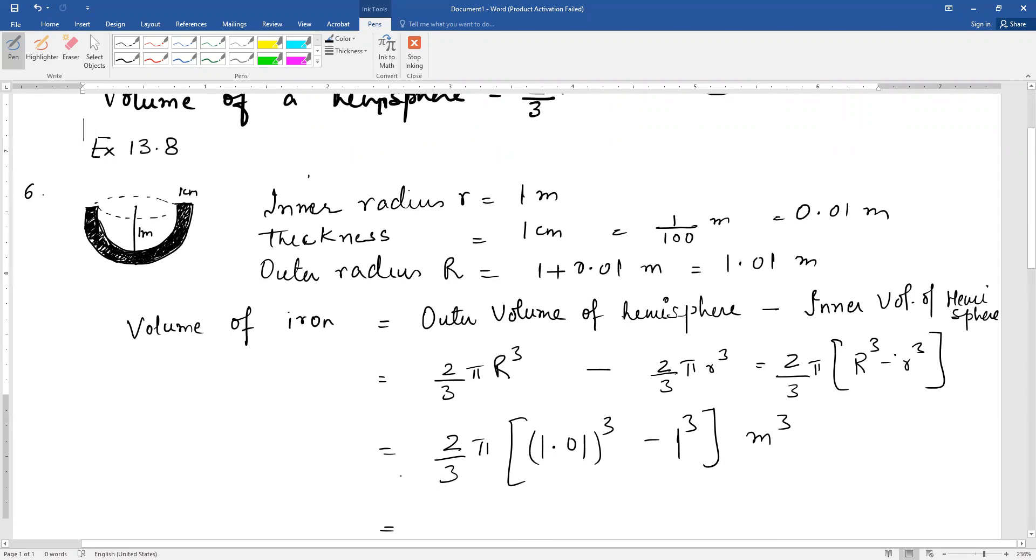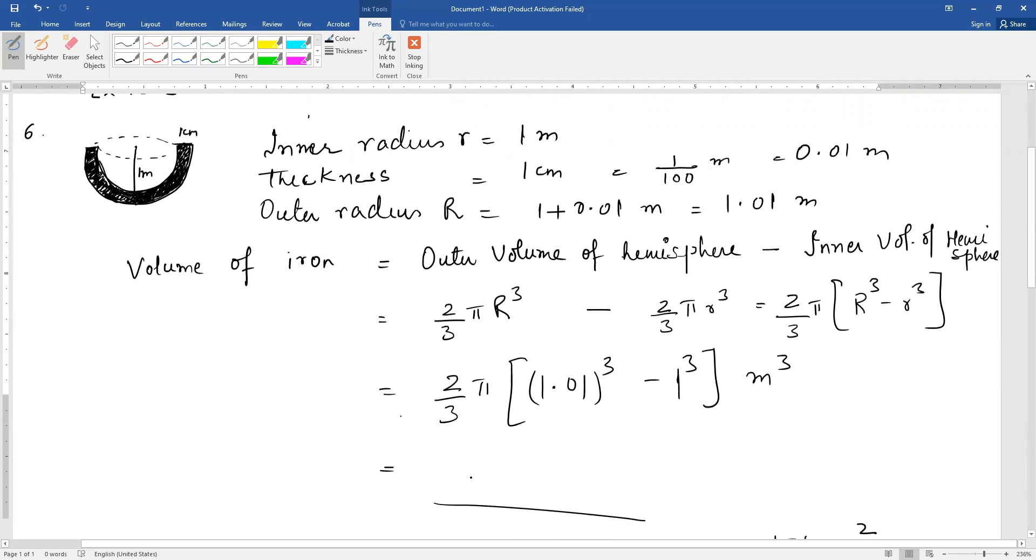Taking 2/3 π common, substitute capital R as 1.01 meters and small r as 1 meter. You can do these calculations yourself and get the answer. I hope you can do these calculations.